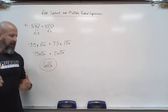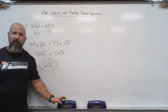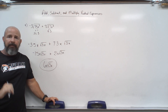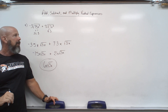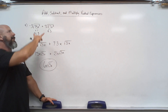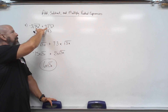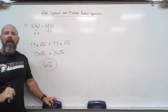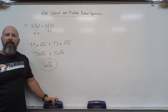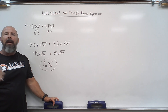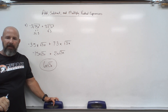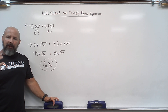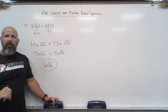Anytime we're trying to combine radicals through addition and subtraction, I need like terms. If they're not like, I still need to make sure they're all simplified, so I might have to go through some extra steps. That simplifying should be the longest part of the process.